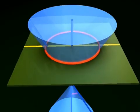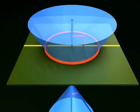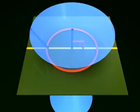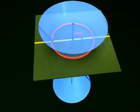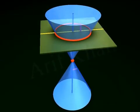When the plane is perpendicular to the axis, the ellipse becomes a circle. Thus, a circle is a special type of ellipse.